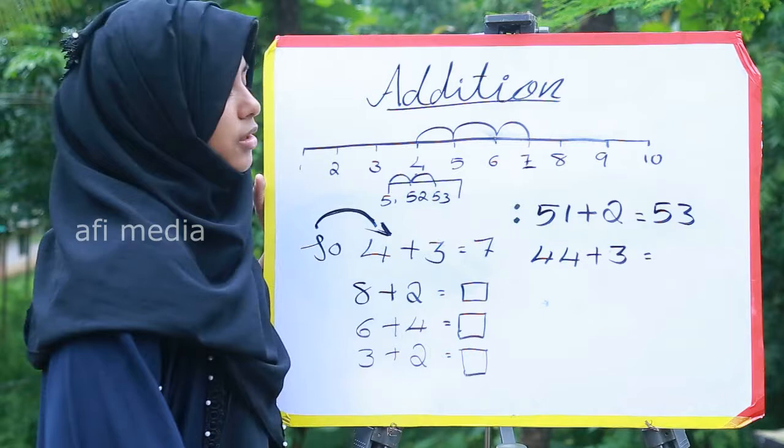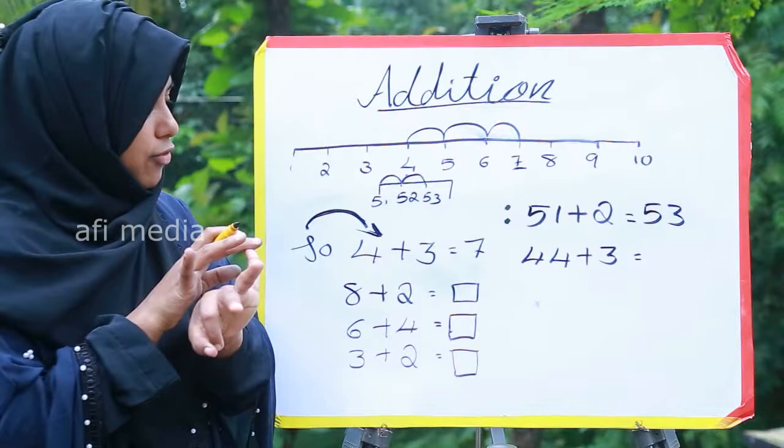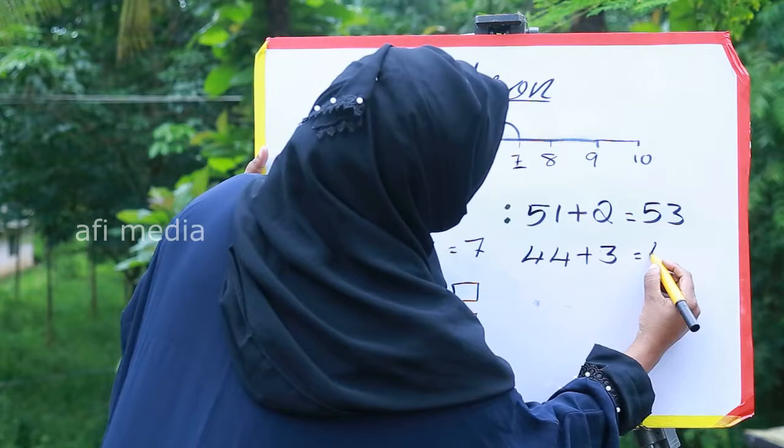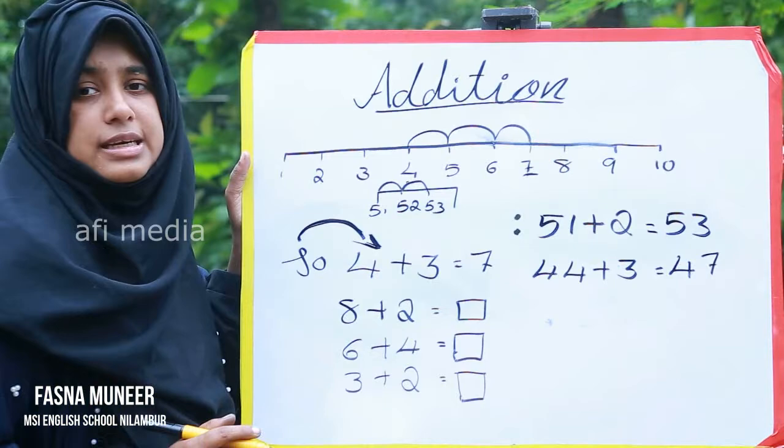The next one: 44 plus 3. In our mind we take 44, then we take three fingers and count: 45, 46, and 47. We write here 47. This way we can find out two-digit plus one-digit addition.